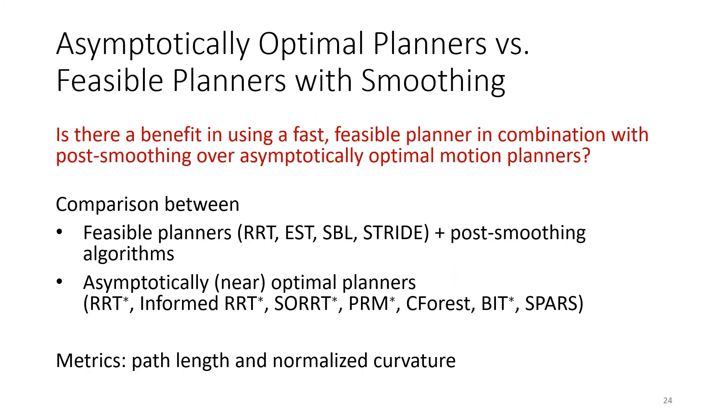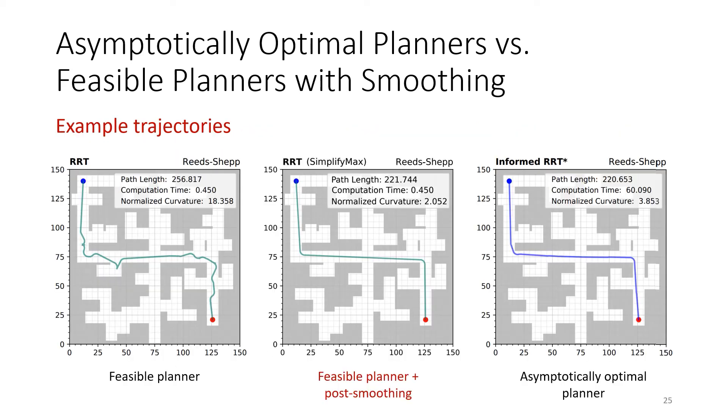BenchMR allows us to use different combinations of feasible motion planners and post-smoothing algorithms. Such combinations have rarely been thoroughly evaluated and compared against asymptotically optimal planners. In this experiment, we show such a comparison and analyze the performance of those two classes of algorithms in terms of path length and normalized curvature.